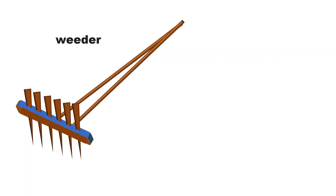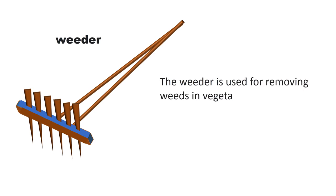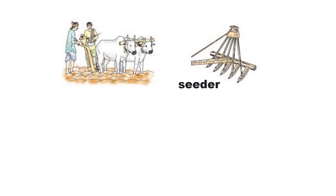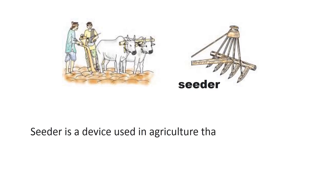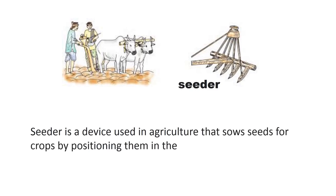The weeder is used for removing weeds in vegetable gardens and groundnut gardens. In modern days, a seeder is used. A seeder is a device used in agriculture that sows seeds for crops by positioning them in the soil.